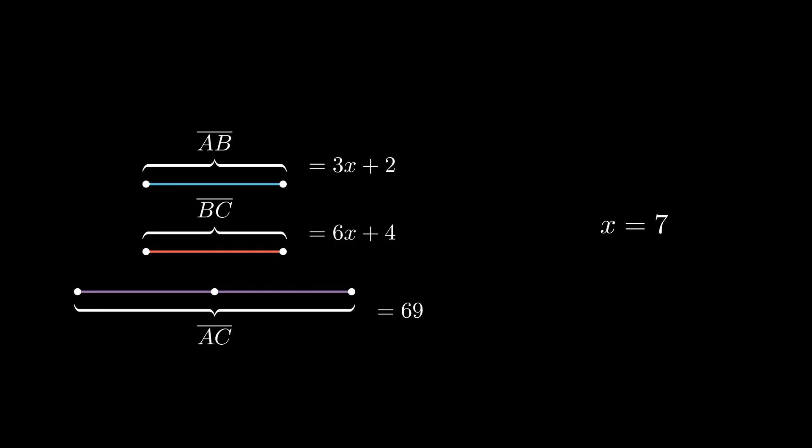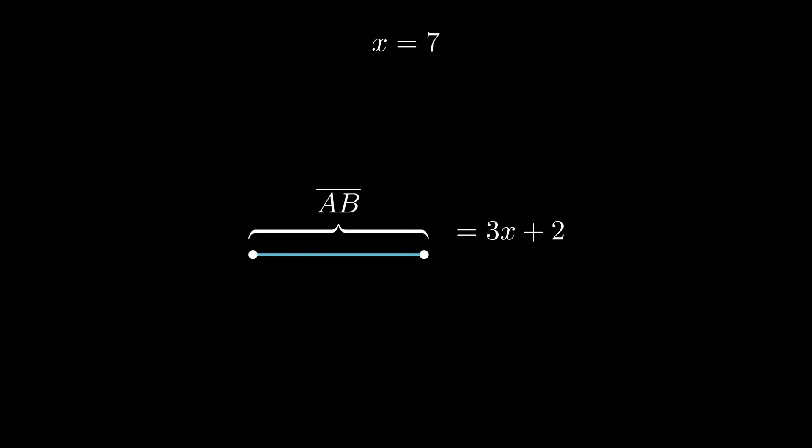The next step is to find the lengths of the component line segments. To find the length of AB, we can substitute the value of x, 7, into the given expressions. Simplify and we get AB equals 23.